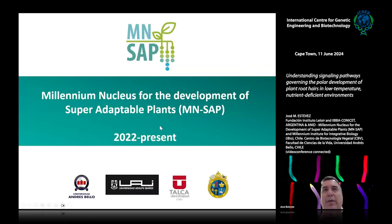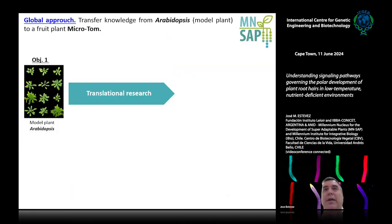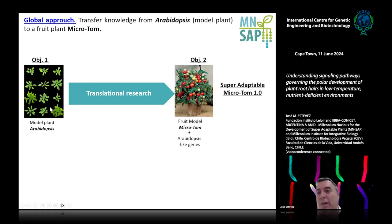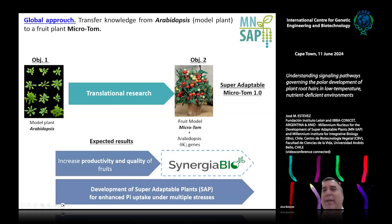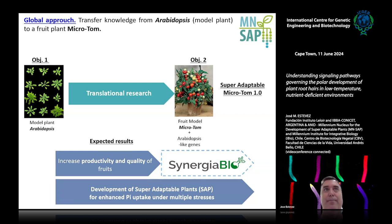I'm part of the Millennium Nucleus for the Development of Super Adaptable Plants, located in Chile. What we are trying to do is take all the knowledge we have in Arabidopsis and apply it to more agronomically relevant plants. For example, we are working on Microtom tomato. We already have a Microtom line with modified roots that appears to produce bigger and more fruits. We are in a good track trying to apply root biology knowledge into applied products.